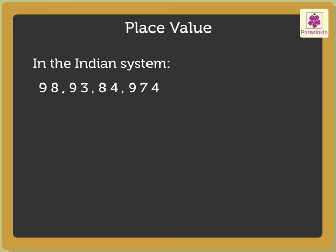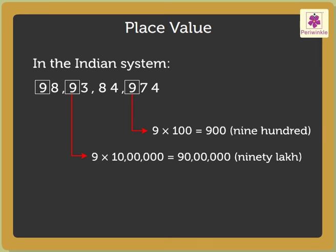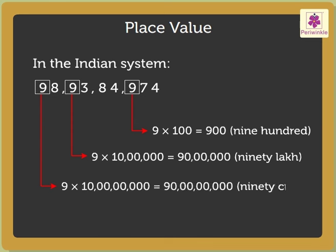The place value of the 9 on the right is 9 × 100 = 900. The place value of the 9 in the middle is 9 × 10 lakh = 90 lakh. Lastly, the place value of the 9 on the left is 9 × 10 crore = 90 crore.